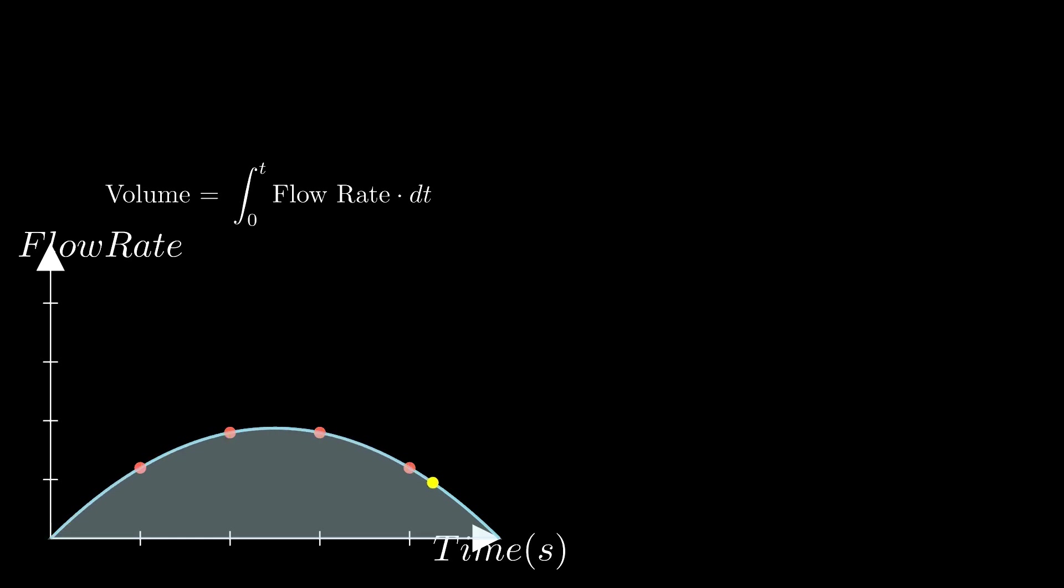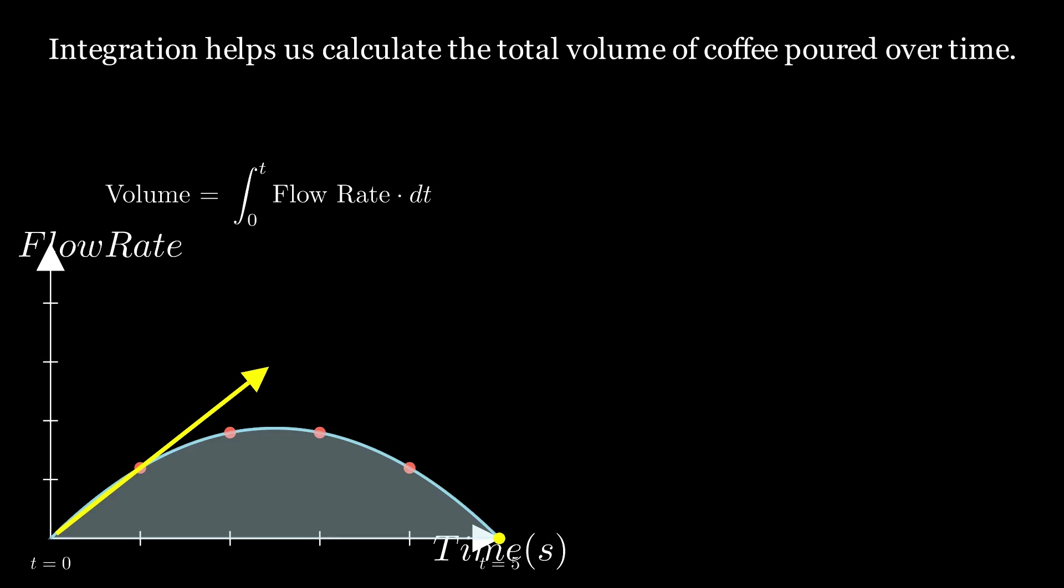Think of each slice as a tiny rectangle. Its width is a moment in time, and its height is the flow rate at that moment. Integration sums all these rectangles, no matter how the flow changes, to give us the total volume poured. And this is the magic of calculus, taking something as fluid as pouring coffee and turning it into something mathematically precise.